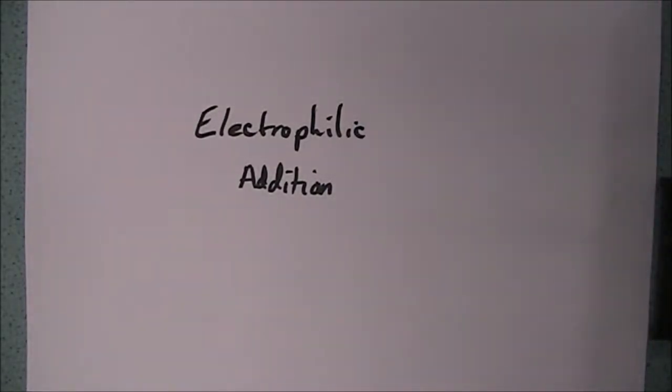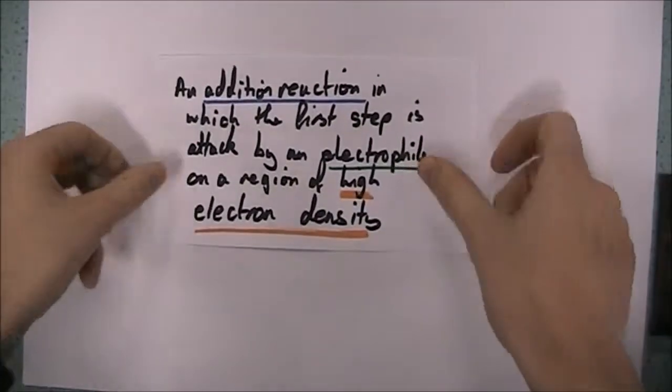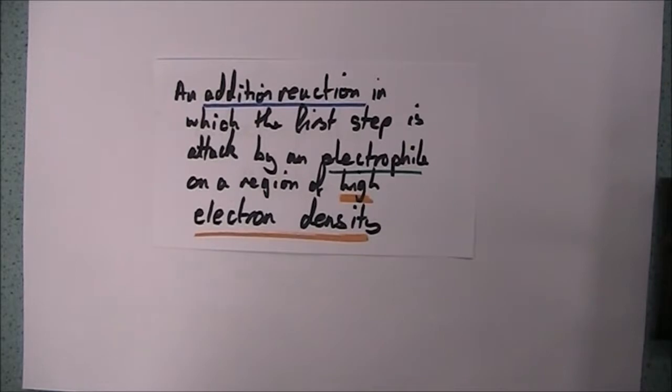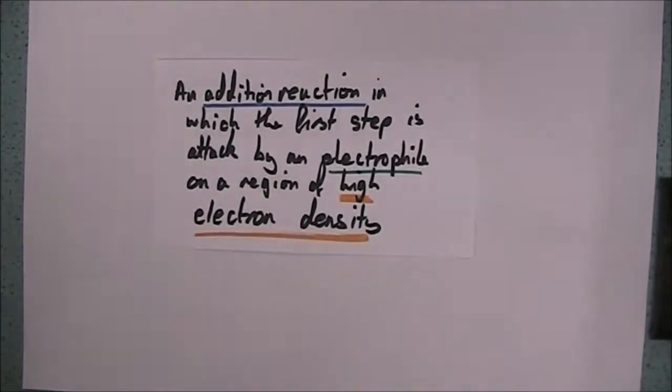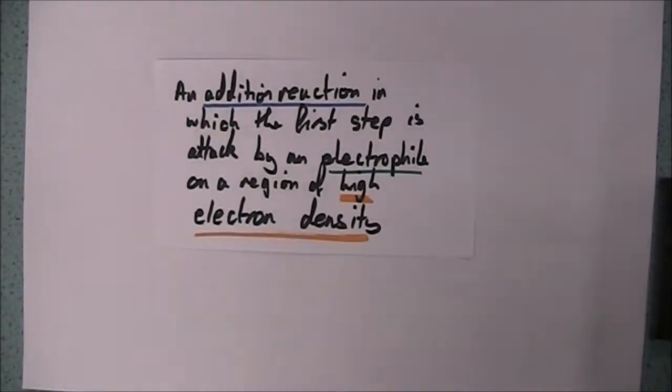Electrophilic addition is the name of the mechanism that we're going to study with the alkenes topic and we've got a definition for that. Electrophilic addition is an addition reaction in which the first step is the attack by an electrophile on a region of high electron density. Which, based on the question, what do those words mean?